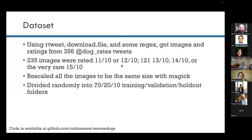The dataset I'm using was gathered using the rtweet download file and some regex to get the images and ratings from a little over 350 tweets from @dog_rates. Of those images, 235 are rated 11 or 12 out of 10, and 120 are rated 13, 14, or the very rare 15 out of 10. I rescaled these images to the same size with magick, then randomly divided them into training, validation, and holdout sets. All the code I'll talk about today is available on my GitHub at github.com/RobinsonES/we-rate-dogs.